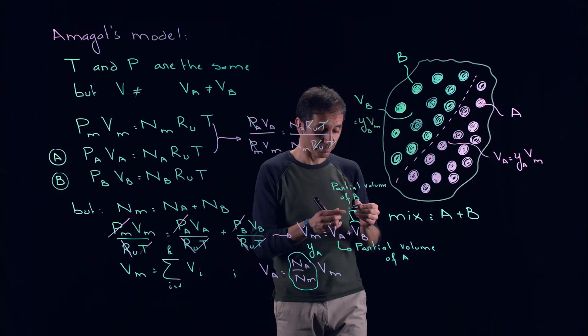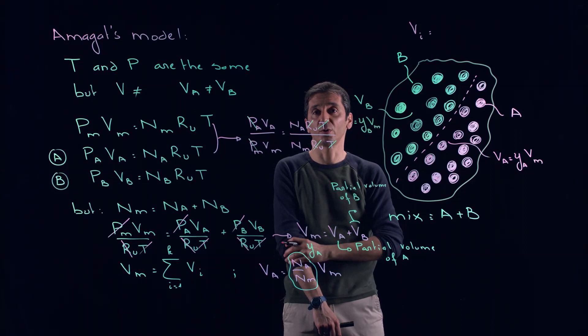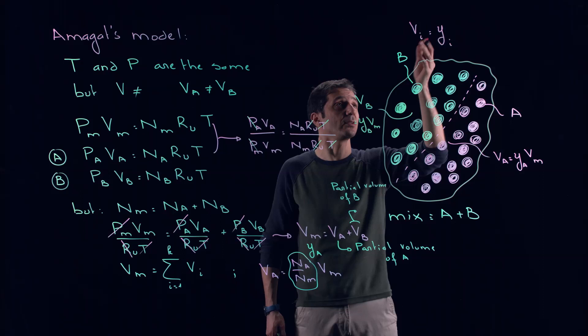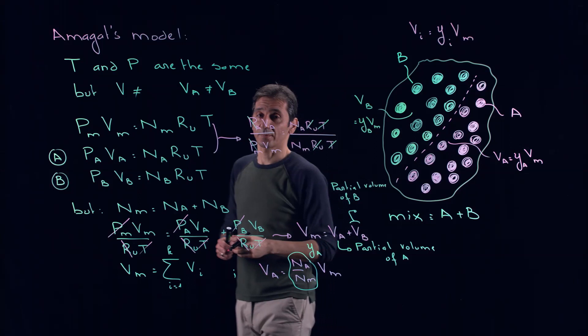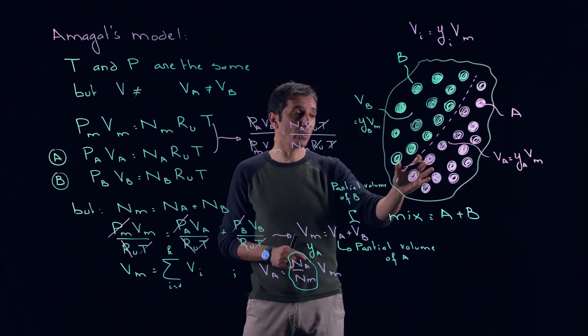We recognize this term N_A / N_M as the mole fraction Y_A. So the volume occupied by A equals Y_A × V_M, and the volume occupied by B equals Y_B × V_M. Generalizing, the partial volume of any component of our mixture equals its mole fraction multiplied by the total volume of the mixture. This is Amagat's model: same temperature, same pressure, but the two gases don't mix — each occupies a portion of the volume.